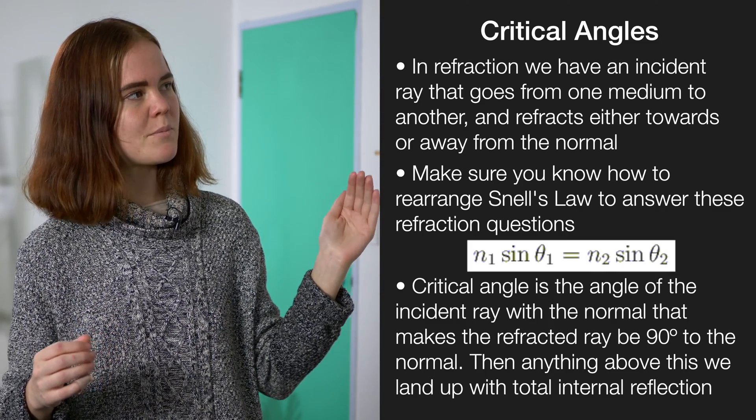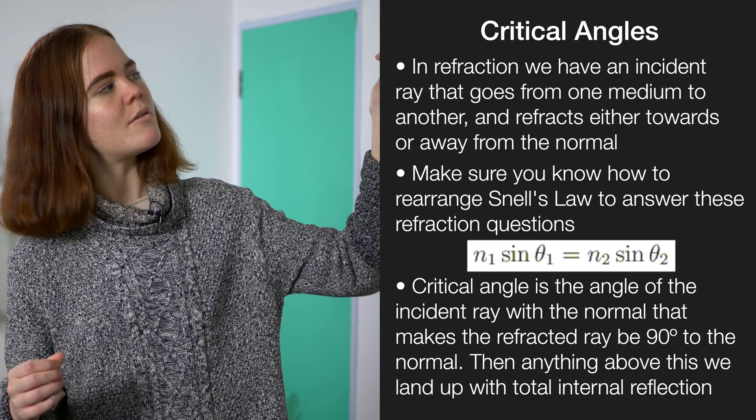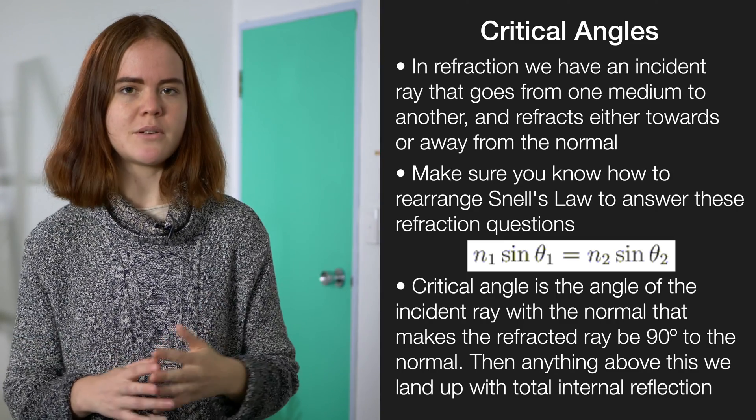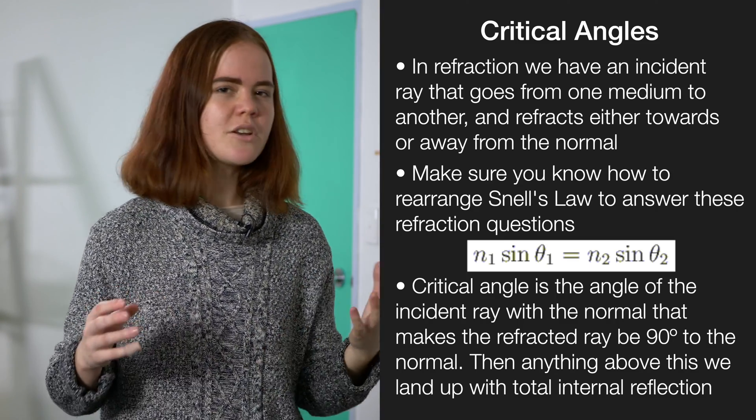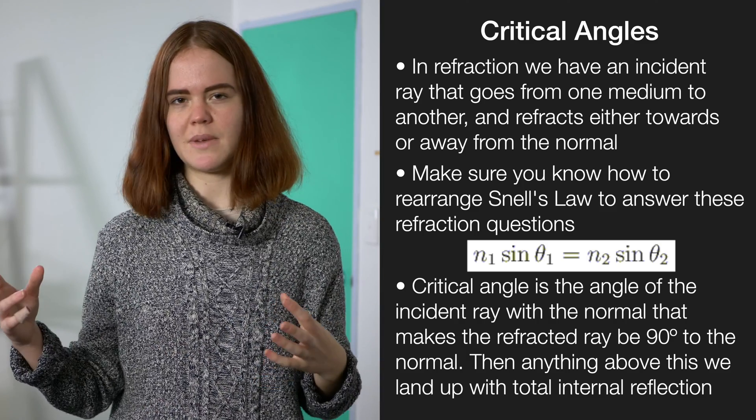Which is the angle where the light will be moving from the first medium, and then will be refracted right along between the boundary between the two media. This only happens when the light is moving from a more dense medium to a less dense medium.